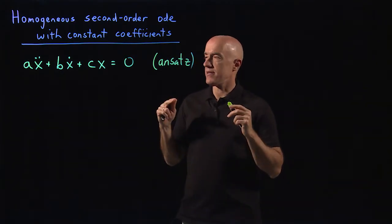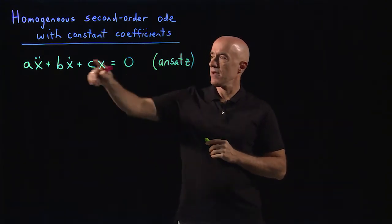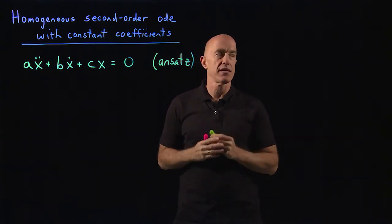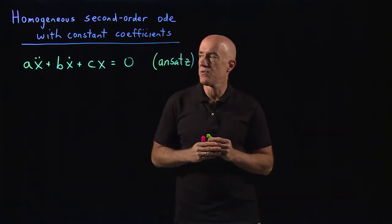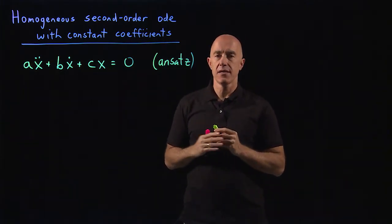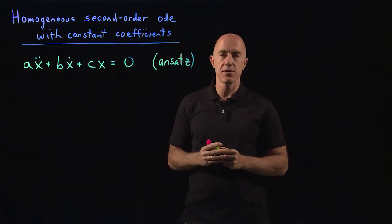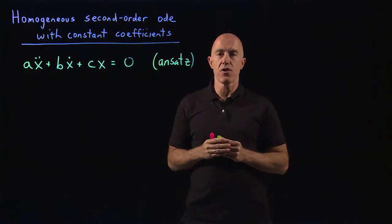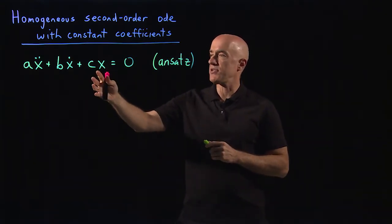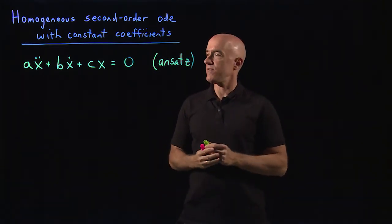So what is the natural guess for an equation of this type? We would like to convert the differential equation into an algebraic equation. To do that, we want to have some functional form for x that will cancel after we substitute in. We rack our memory for the type of function that when you differentiate it, you get back the same function. And we think of the exponential function.